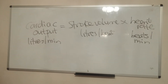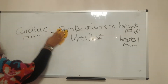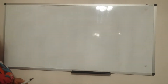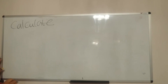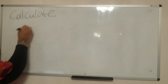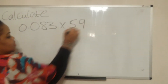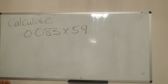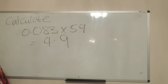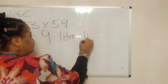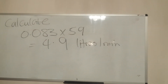Here is a simple worked example. The question says: calculate the cardiac output of a heart that pumps 0.83 liters of blood per beat at a rate of 59 beats per minute. Using the formula, cardiac output = 0.83 × 59. Using a calculator, the answer is 4.9 liters per minute.